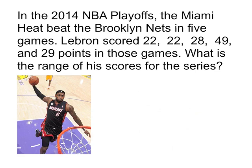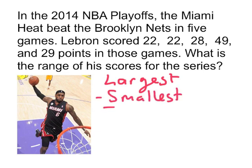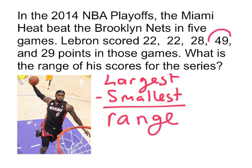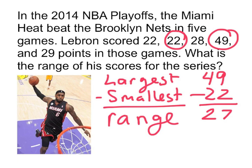So again, you take the largest and you subtract the smallest from it to get the range. So the largest one was 49 points. He scored a lot of points that game. And then you need to take away the smallest one, which is 22. And we find that the range is 27 points. He went all the way from 22 points up to 49, and his range was 27.